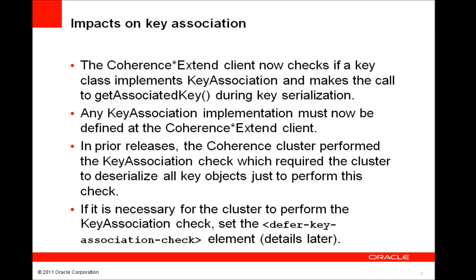What are the impacts on key association processing? The Extend client is now performing the key association processing, saving processing time in the Coherence cluster. This means that if you want to set up key association for a key class used by Extend clients, that key association must be defined in the Extend client. In prior releases, the association was required to be defined in the cluster. If you still want the cluster to do the key association processing — for example, if you have an existing deployment already set up to do key association and you are upgrading to 3.7.1 and don't want to set up key association in the Extend clients — then you can set the defer key association check flag. I'll provide details on how to do that later in this presentation.